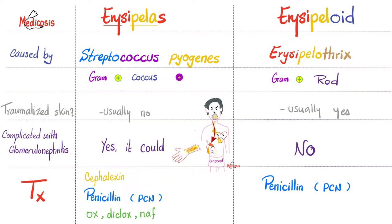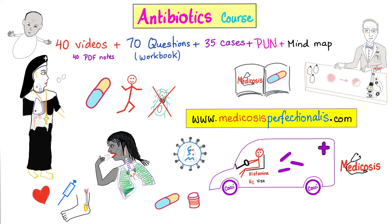Management-wise, erysipelas is treated with cefalexin, penicillin, or oxacillin/cloxacillin/dicloxacillin — especially dicloxacillin. For erysipeloid, penicillin is used, but for disseminated disease, ceftriaxone — a third-generation cephalosporin — is used.